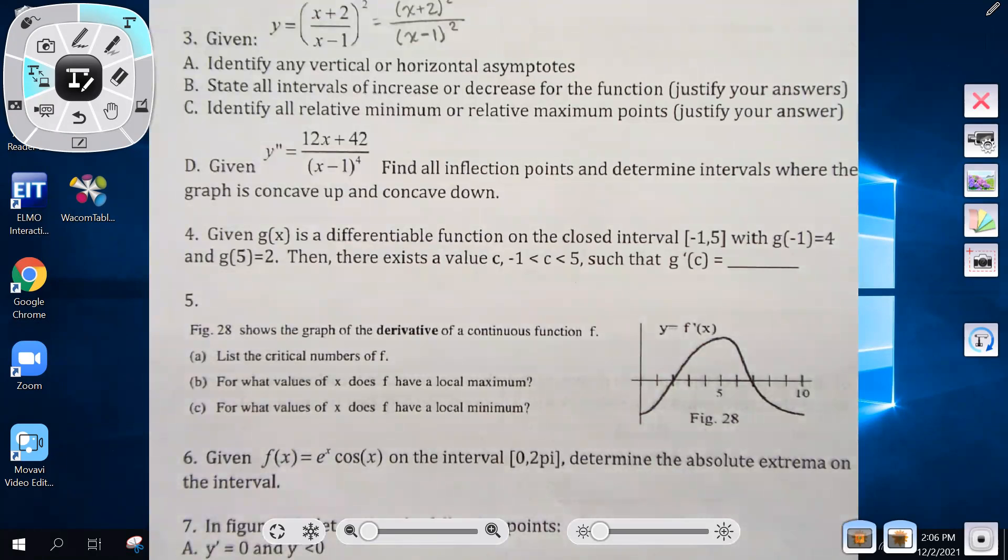Number four says given g(x) is a differentiable function on the closed interval from negative one to five with g(-1) = 4 and g(5) = 2, then there exists a value c between negative one and five such that g'(c) equals what. Looking at this, I know it's talking about the Mean Value Theorem.